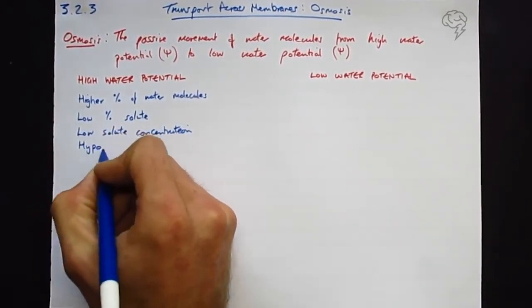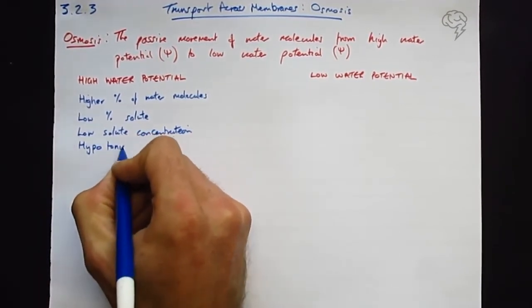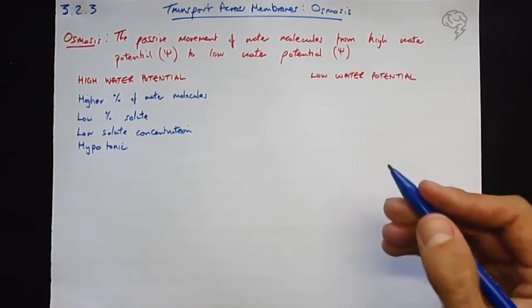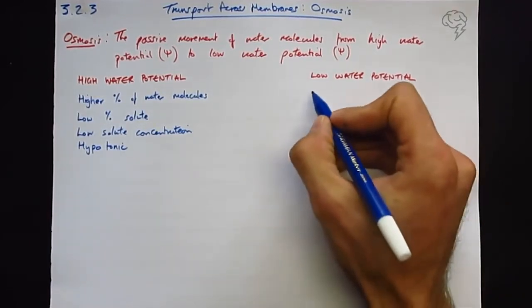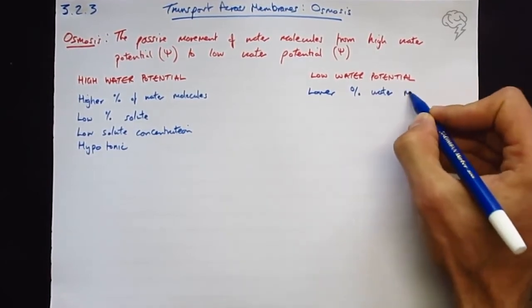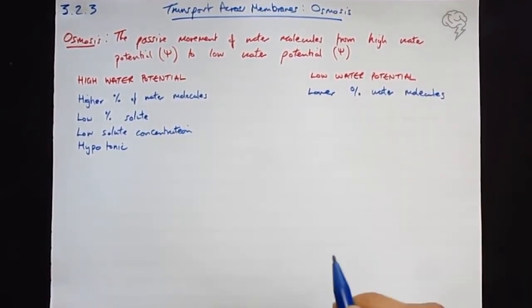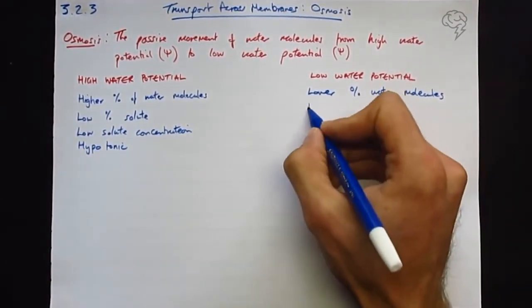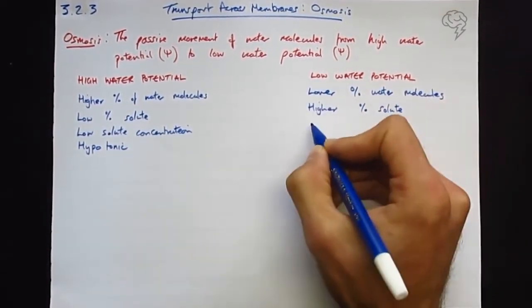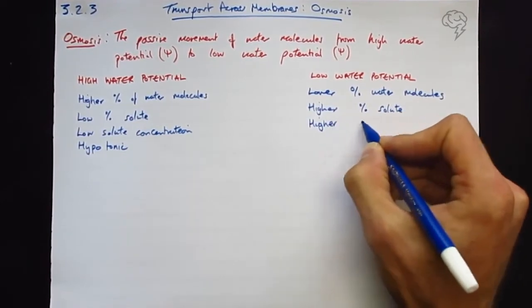So we can look at the opposites of this for low water potential. It's going to have obviously the lower percentage of water molecules, it's going to have a higher percentage of solute, or the higher solute concentration, and we could describe it as hypertonic or more concentrated.